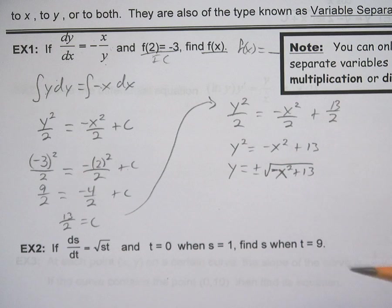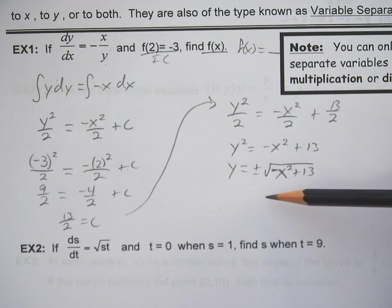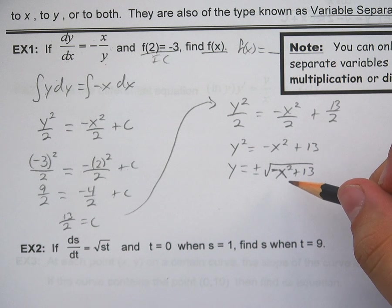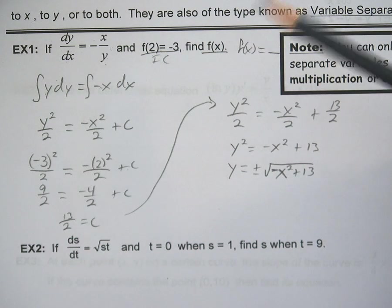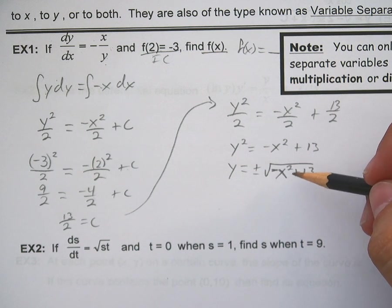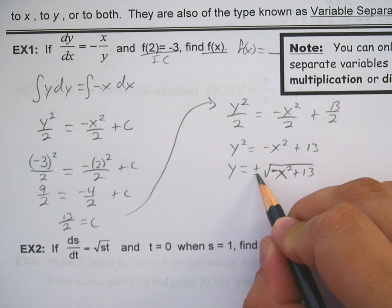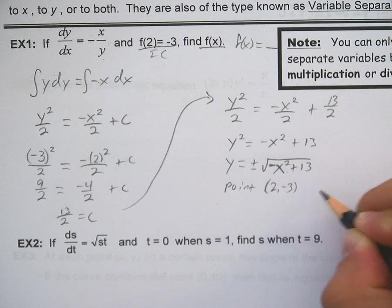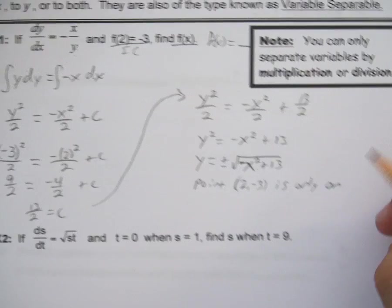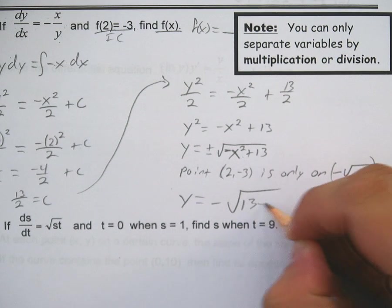Okay, now there is a catch on this one. Since I have my initial condition, I've got to put it in here and find out where this thing goes. And if you'll remember what a square root looks like, the point (2, -3) is only on the negative side of that. In other words, plugging a 2 in here, you get 4, -4, 13, which is the square root of 9. So the -3, if you plug the 2 in here, the negative is only going to come from the negative side. So make a little note, the point 2 comma -3 is only on the negative square root.